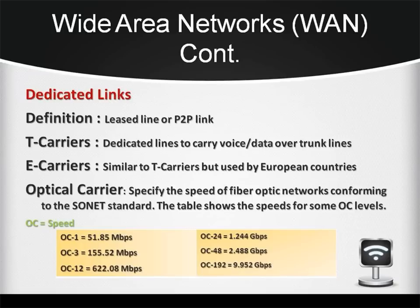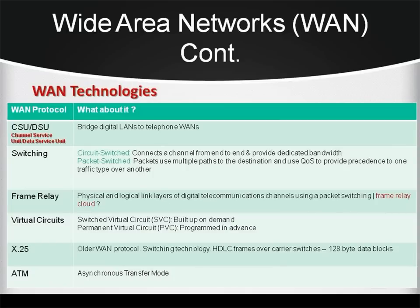The table below shows speeds for various optical carrier (OC) levels. Among the protocols and technologies: CSU/DSU — Channel Service Unit and Data Service Unit — are used when digital equipment connects a LAN to a WAN, because signals and frames can vary. The CSU, using the DCE, connects the network to the telephone company's line. The DSU, using a DTE, converts digital signals from routers, bridges, and multiplexers into signals that can be transmitted over the telephone company's digital lines.